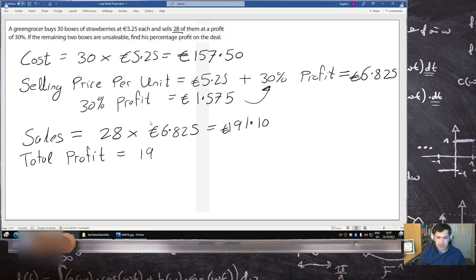the total profit for the whole deal will be... that's right, the total sales minus the total cost. And that's €33.60.